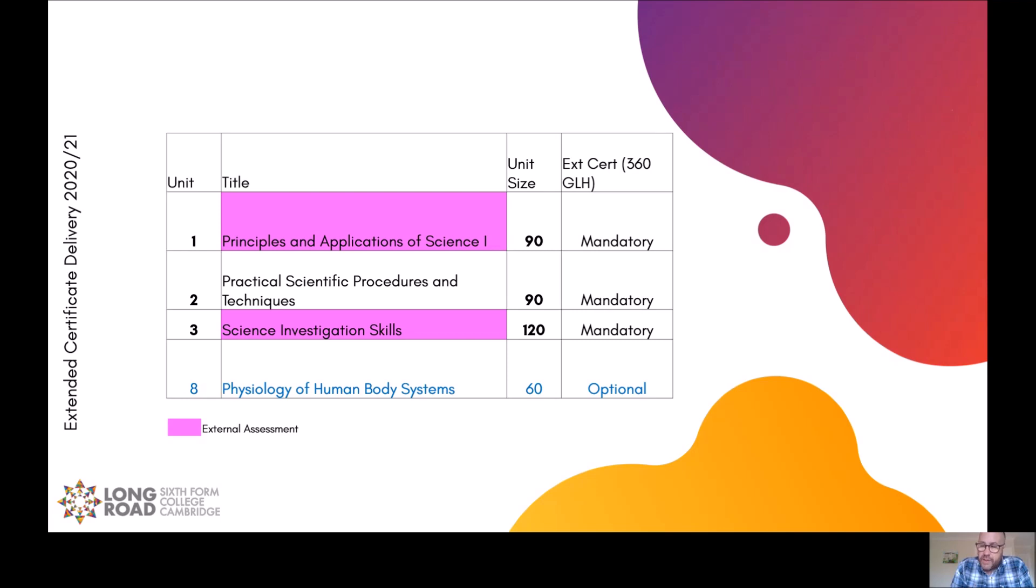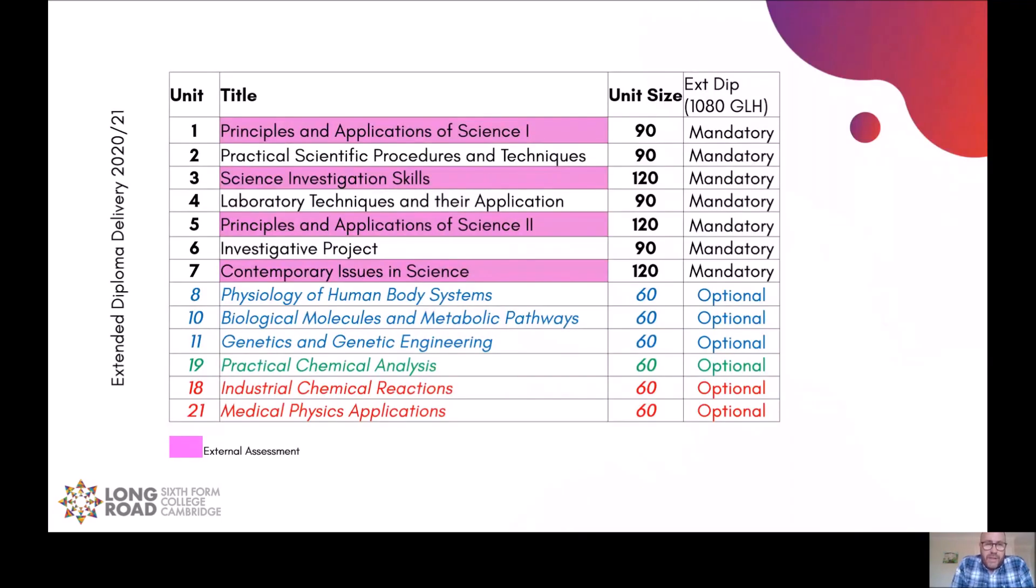The extended diploma is considerably bigger because it obviously is a 3 A level equivalent. This will resume where the other course doesn't cover. So unit number four is all about health and safety within a laboratory. It's also looking at how information is stored within a laboratory. And you will also learn a number of practical techniques to make an organic liquid and an organic solid.